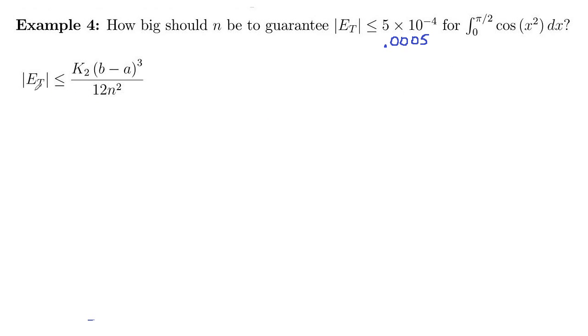Remember error for the trapezoid formula, absolute error is less than k2 times b minus a cubed over 12n squared. We need to find that k2.